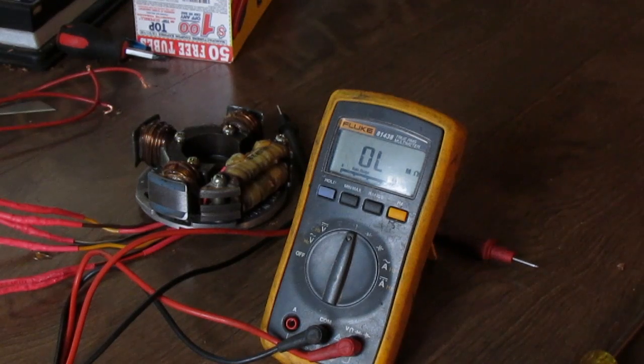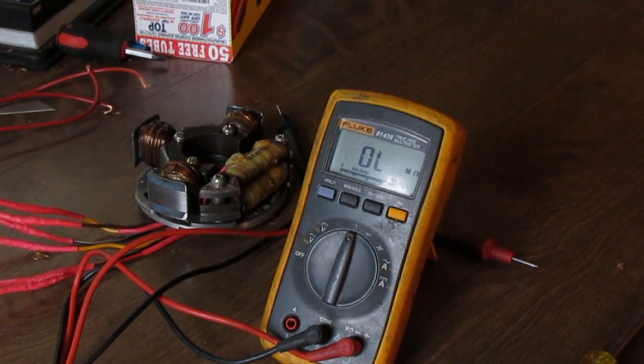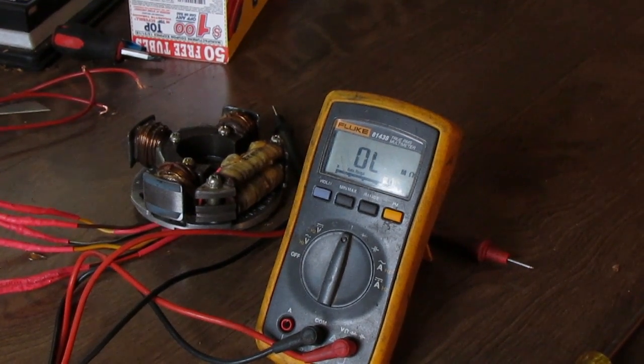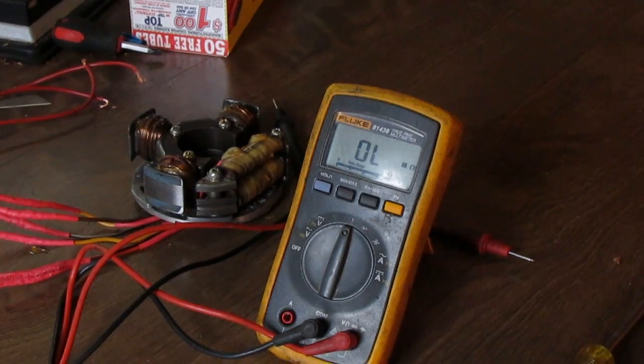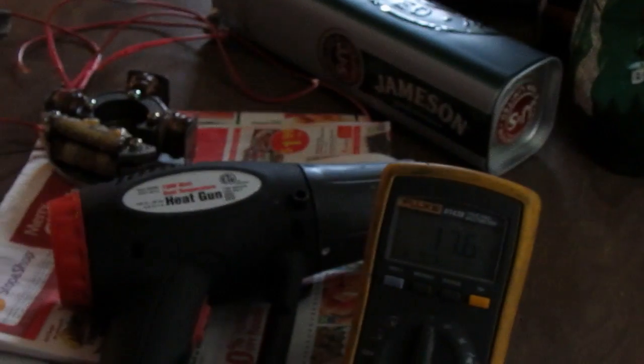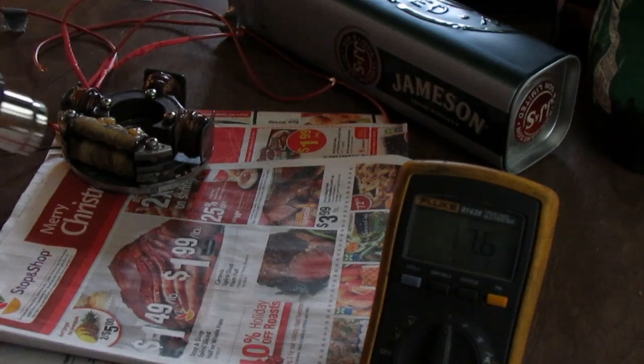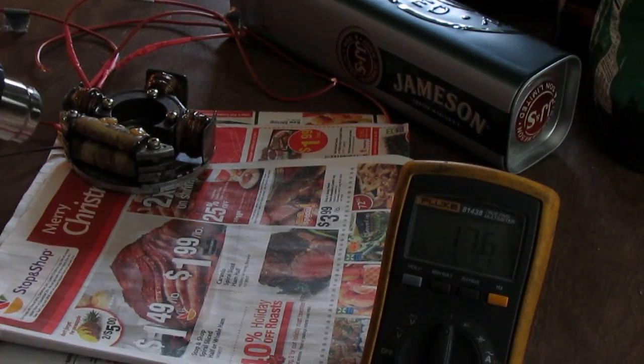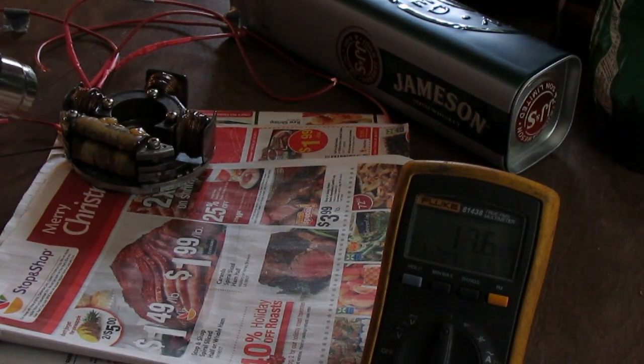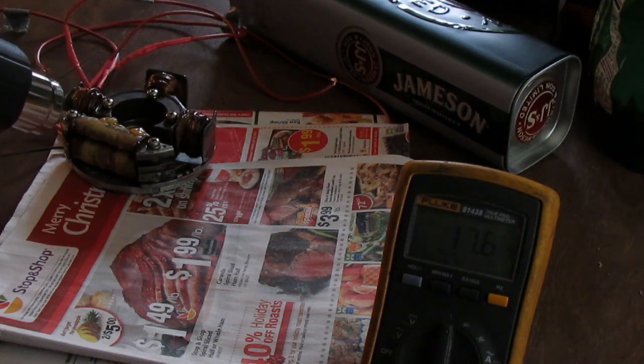So if I heat the ignition coils, you guys will see it right now, exactly the difference between the ohm readings when it's real hot. Now you can see the ohm rating right there, 17.6. I'm going to throw this heat gun right on the ignition coil on high and we'll see what happens to the ohm reading.